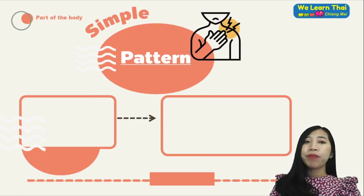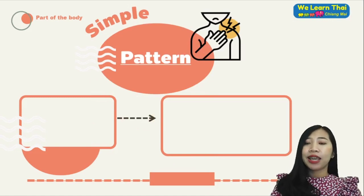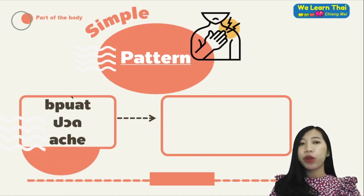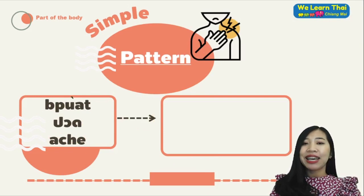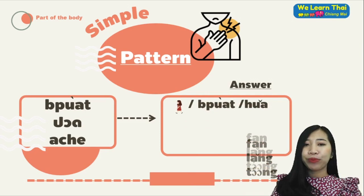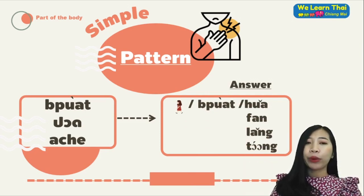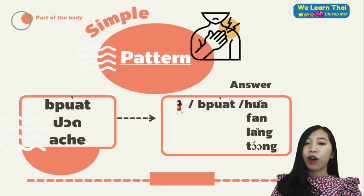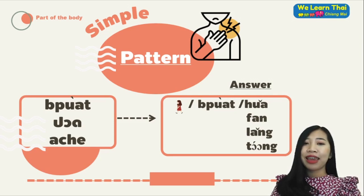For simple patterns, the first one, we have the word ปวด. This means an ache or pain inside the skin that you cannot see. For example: ดีฉันปวดหัว (I have a headache), ดีฉันปวดฟัน (I have a toothache), ดีฉันปวดหลัง (I have a backache), or ดีฉันปวดท้อง (I have a stomachache).